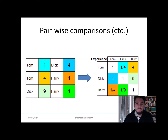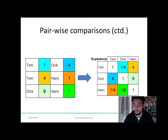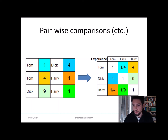We take the results of the pairwise comparisons and translate them into a matrix. The diagonal of this matrix is filled with ones, and you always have the reciprocal values. For example, Tom compared to Dick is one over four, but Dick against Tom is four over one. So this is like a symmetrical matrix.